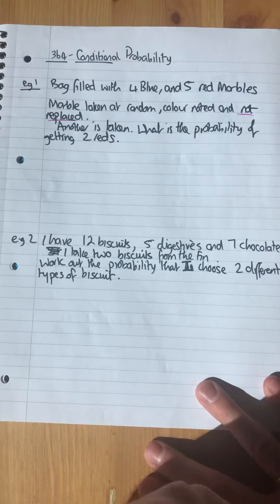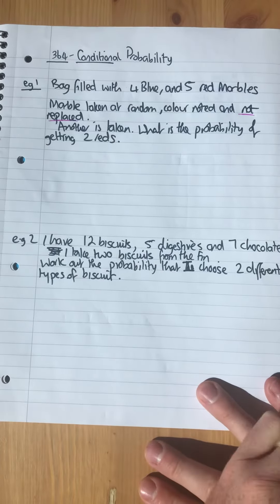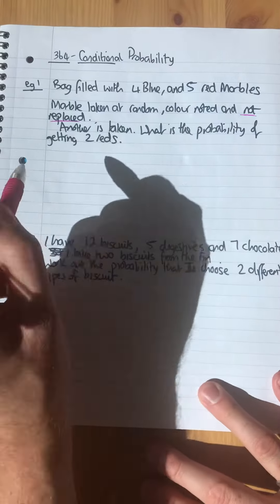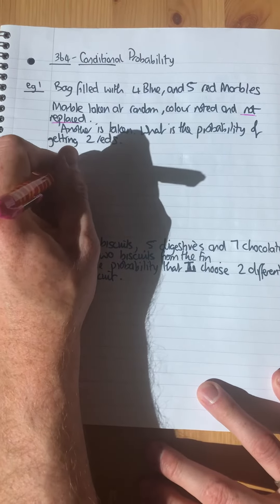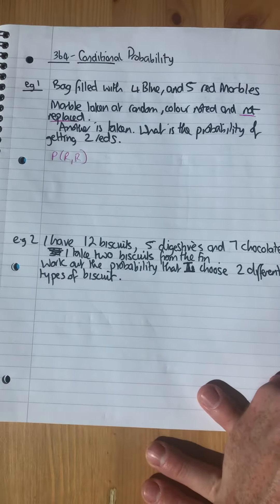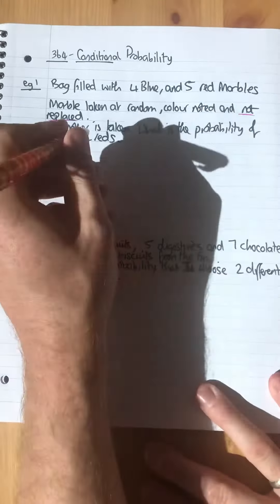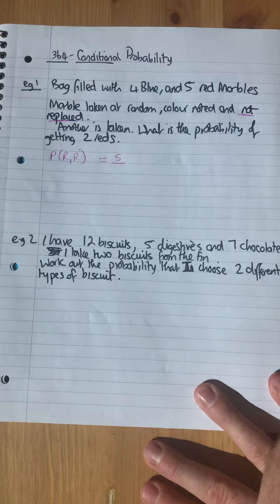So that means it's gonna be less of something the second time it happens. You want to find the probability of getting two reds. So using notation, you want red and red. What's the probability of getting a red the first time? Well, there's five red out of nine altogether.